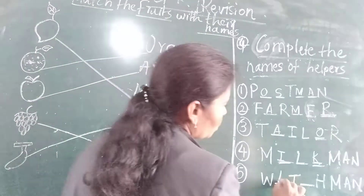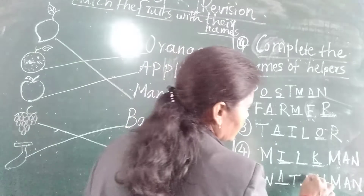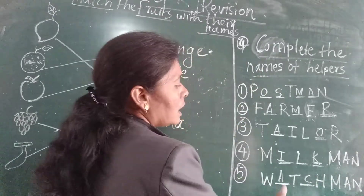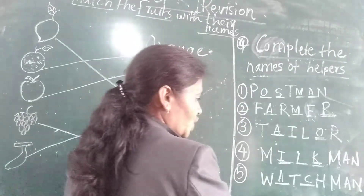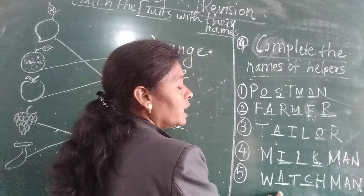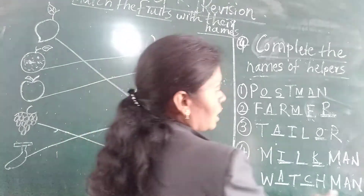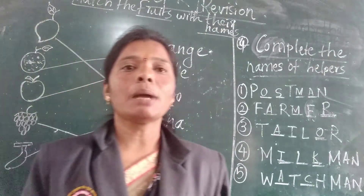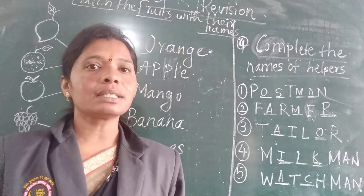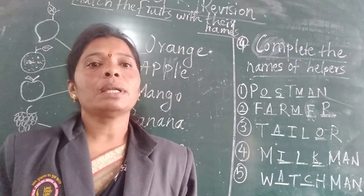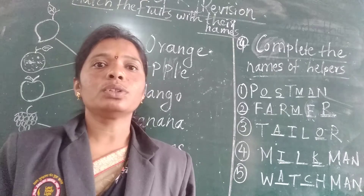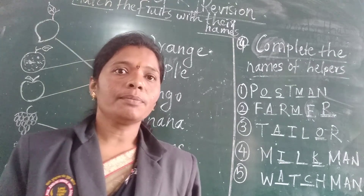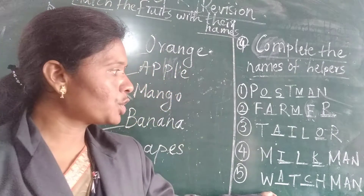W-A-T-C-H-M-A-N watchman. M-A-N man. Watchman. In school we have a watchman — also called peon. The one who guards our house or school — that is a watchman. Understand? Watchman.